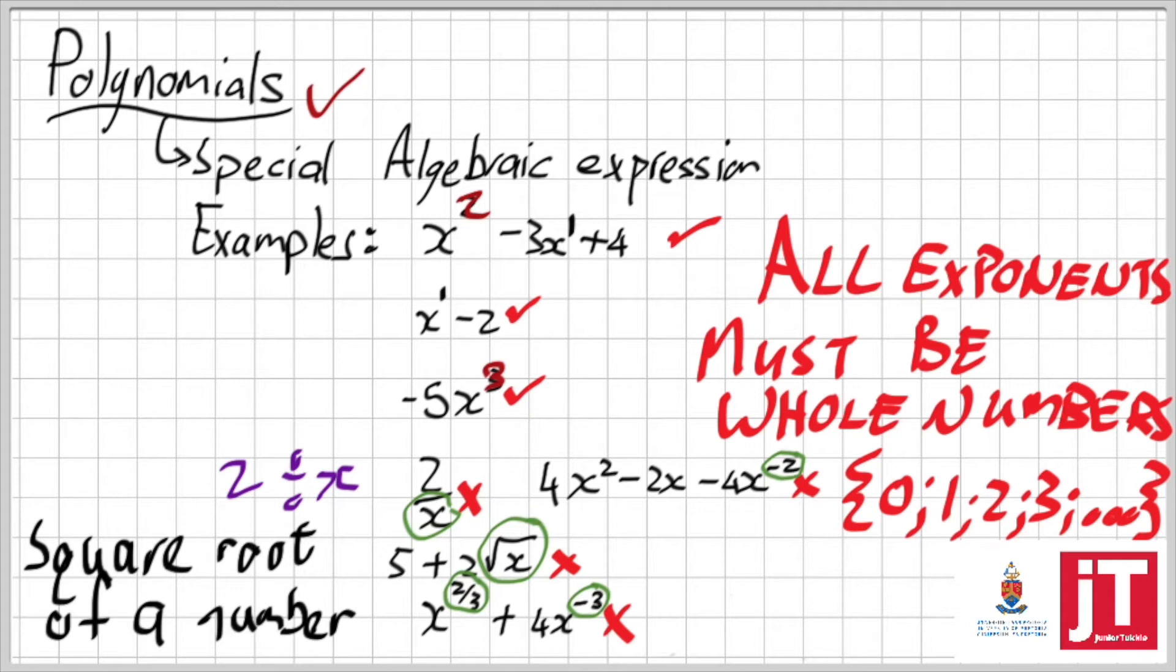But it's easy to see. So the moment that I divide by x, or I've got an x to the negative 2, a root x, or an exponent with a fraction in it, it's not a polynomial, but how would they ask it in the exam?